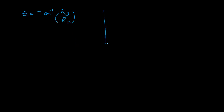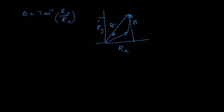I will recap: if you have two vectors A and B, so this is the resultant vector. And if you have a resultant vector with a projection, then this is Rx, and this is the length Ry. So this is basically Rx and Ry. The direction is basically the angular displacement or rotation, and it gives us the angle theta.